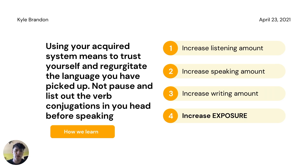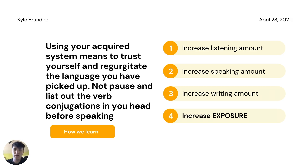I want to clarify this a little bit because it can be quite confusing. Using your acquired system means trusting yourself and basically just producing the language you have picked up or absorbed. This is not about pausing to list out verb conjugations in your head before speaking. Instead, try to switch up your learning style to increase how much you listen, speak, and write — basically increase your exposure to the language so you have more opportunities to acquire it in a natural setting. Because how are you going to speak naturally in a conversation if the way you're learning the language is not natural? You can still use what you've learned during natural pauses or when writing, whenever there's time to bump up the accuracy of what you're saying.